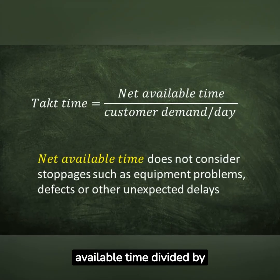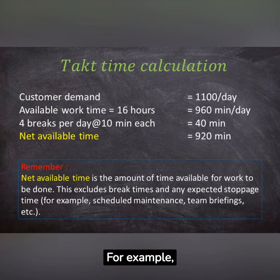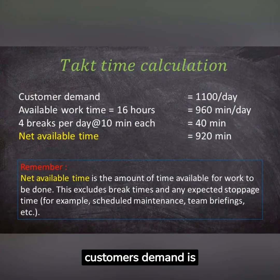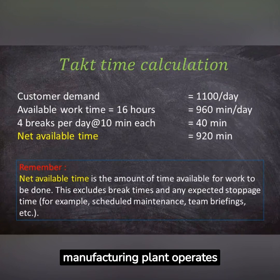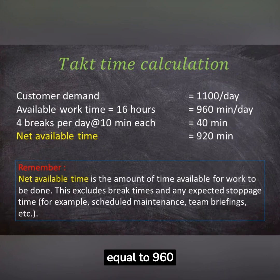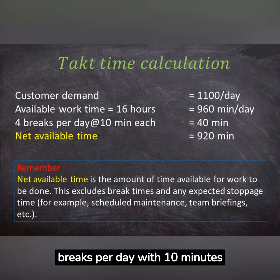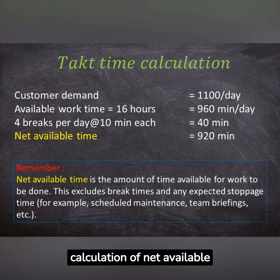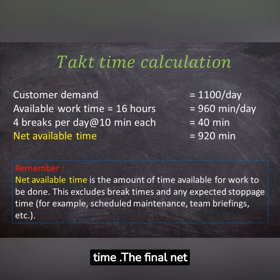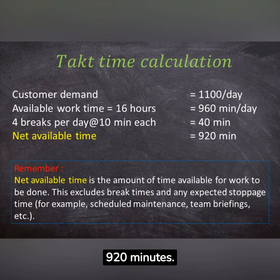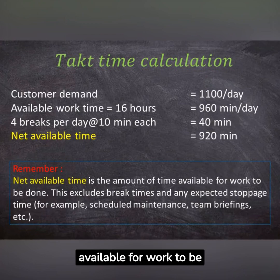TAC time seeks to synchronize the pace of production with the pace of sales. TAC time is net available time divided by customer demand per day. For example, customer demand is 1,100 complex circuit boards per day, and a manufacturing plant operates 16 hours per day, which equals 960 minutes per day. With 4 breaks per day at 10 minutes each, the calculation of net available time excludes break time, giving a final net available time of 920 minutes.